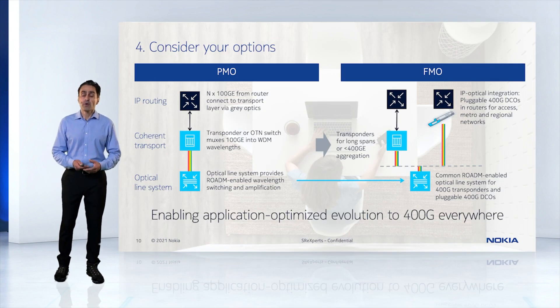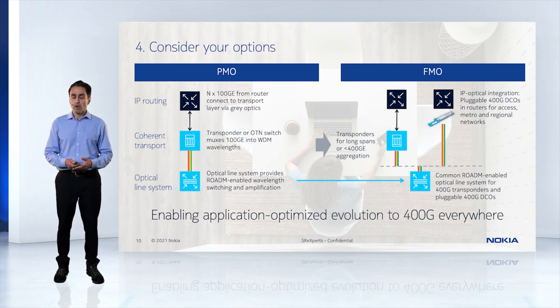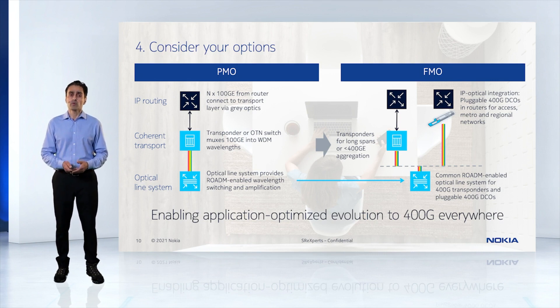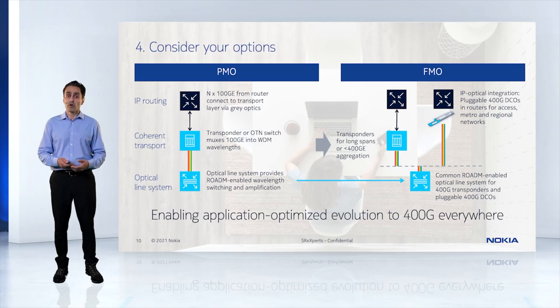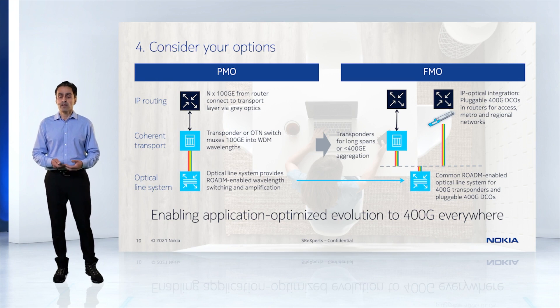Finally, you have to find out what is the best choice for you. The present mode of operation for many networks is N×100G from a router connecting to a transport layer — you go from a router to a coherent transponder and then to the optical system. There are multiple ways you can do this: you can plug the coherent optic directly into a router and connect to a ROADM, or directly connect routers back-to-back. Or you can still utilize your existing transponders for longer spans and higher capacity if you need those.